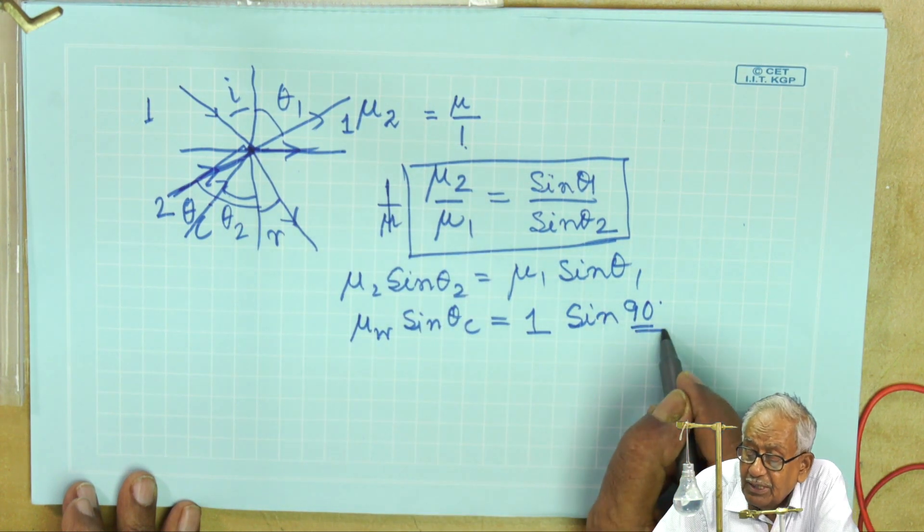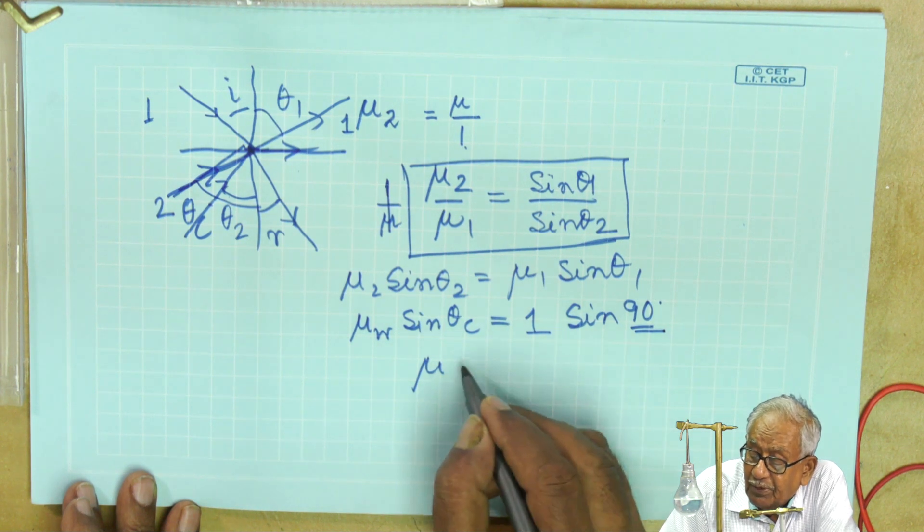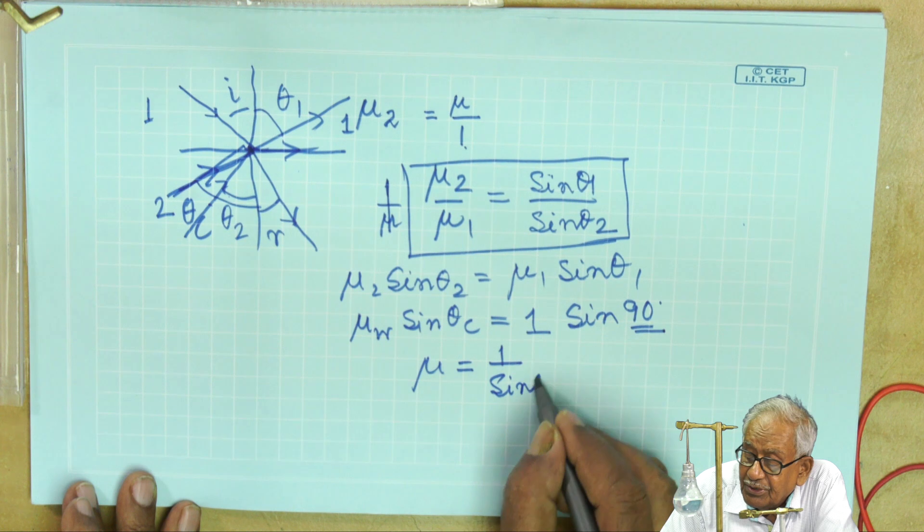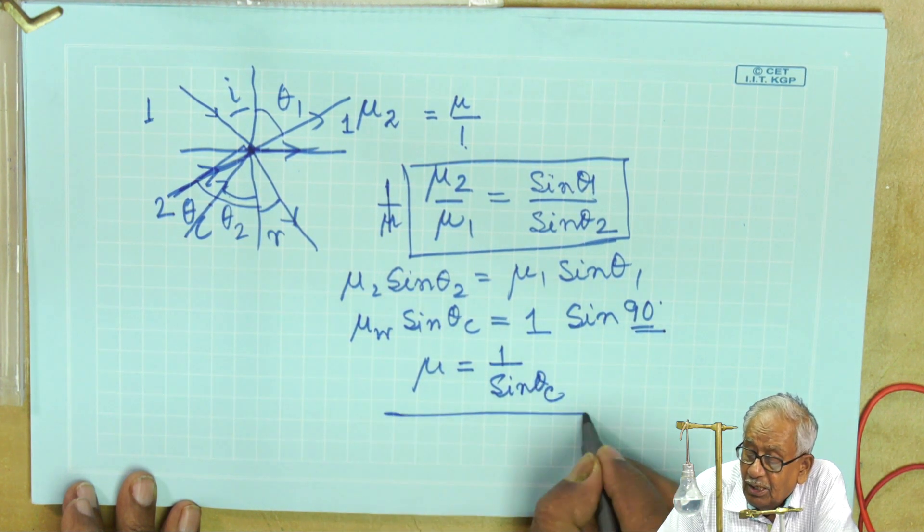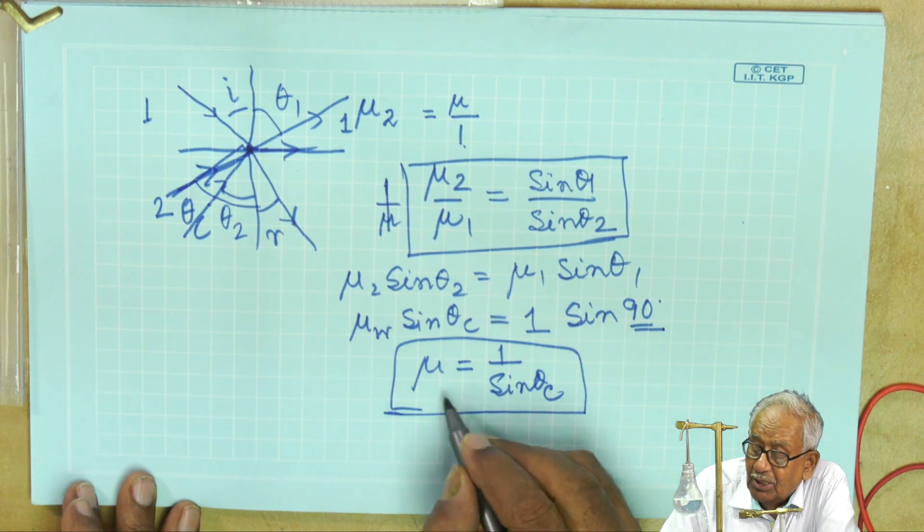Because in this case when it is falling at critical angle, it traces the surface. That means angle of refraction is 90 degrees. So now we get refractive index of the first medium is 1 upon sin θc. By this way, if we know the critical angle from such experiment, then we can find out the refractive index.